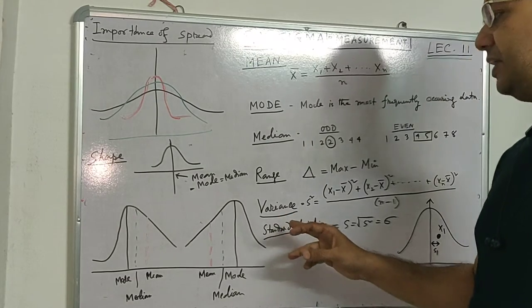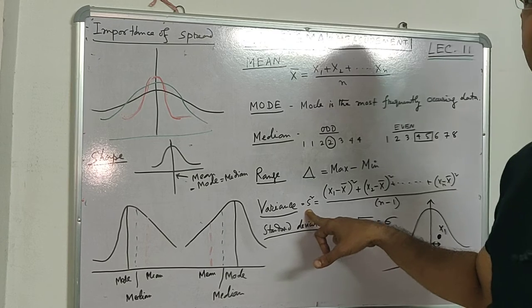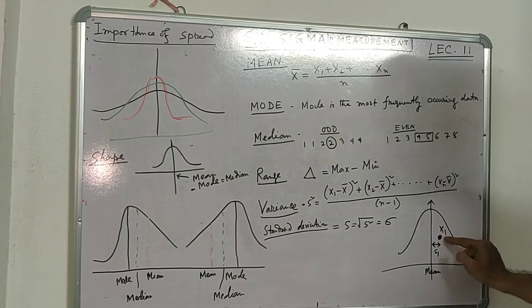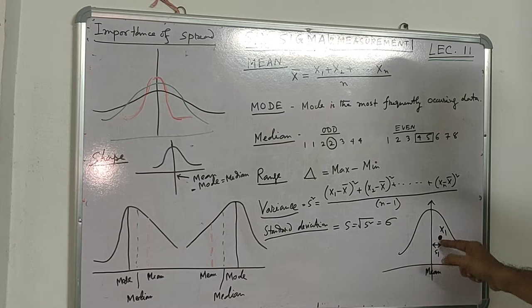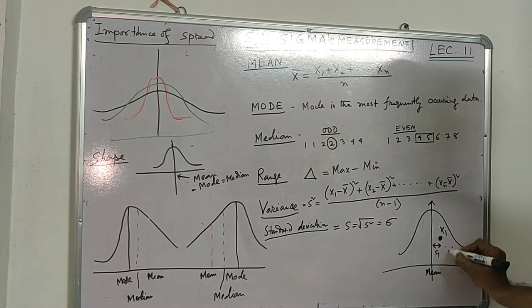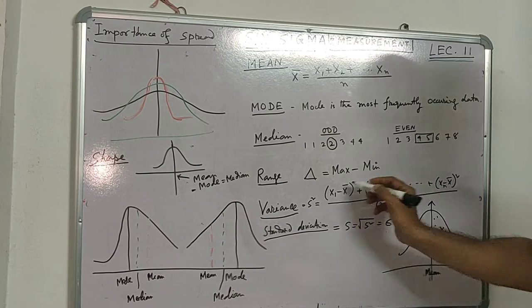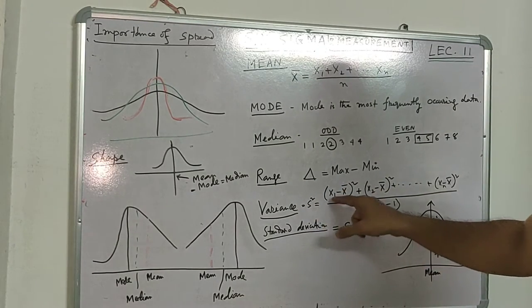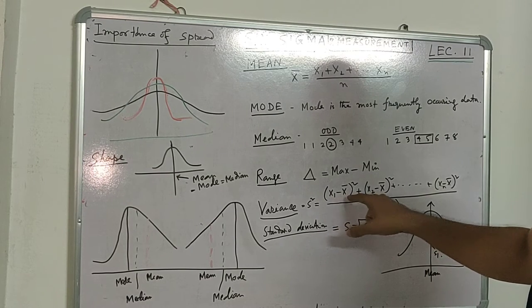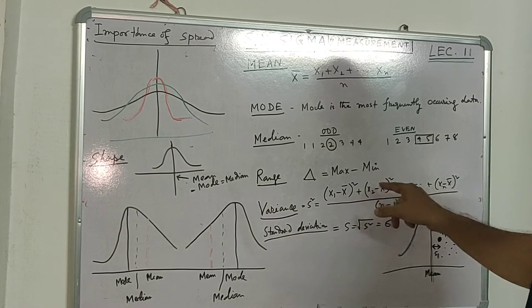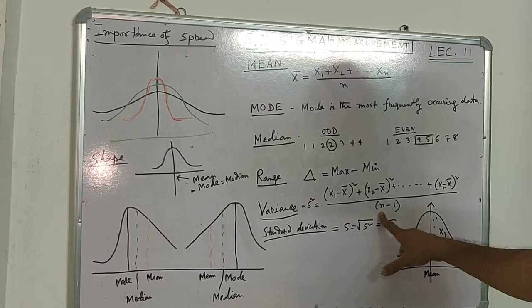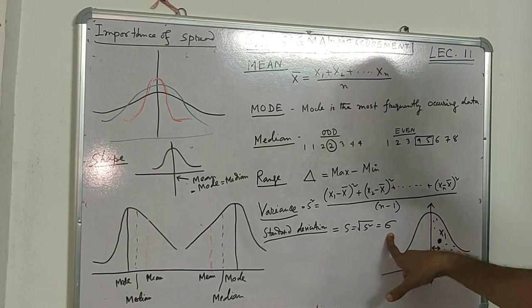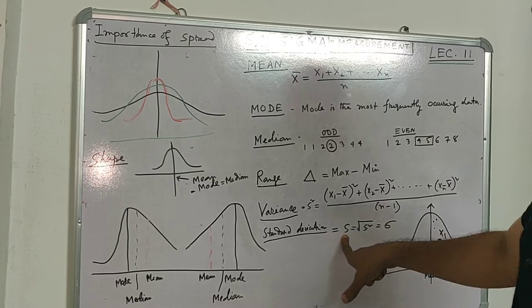Variance is the square of standard deviation. What is standard deviation? If this is a data point x1 and this is the mean, then how much is the data point deviated from the mean—this is s1. Similarly, there will be s2, s3, and so on. The formula for variance is s squared equals the summation of (individual data point minus mean) squared, divided by n minus 1.